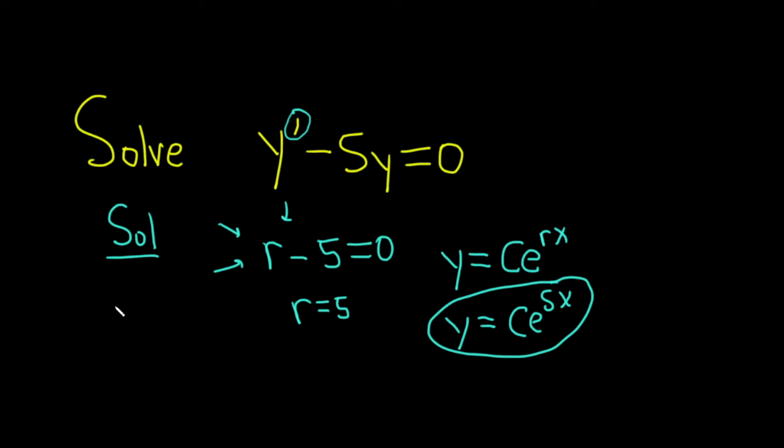For example, if you had y prime plus 2y equals 0, same thing, you would get r plus 2 equals 0, r equals negative 2, and then boom, you've got the answer y equals ce to the negative 2x.